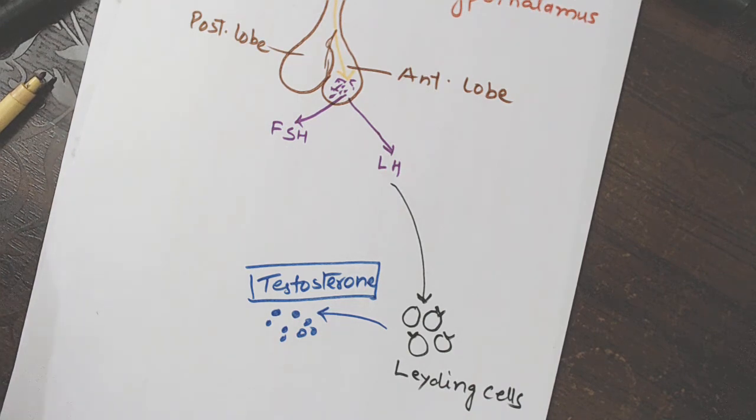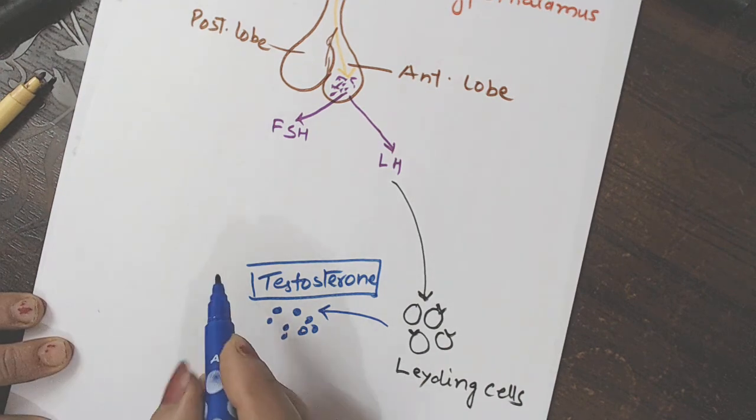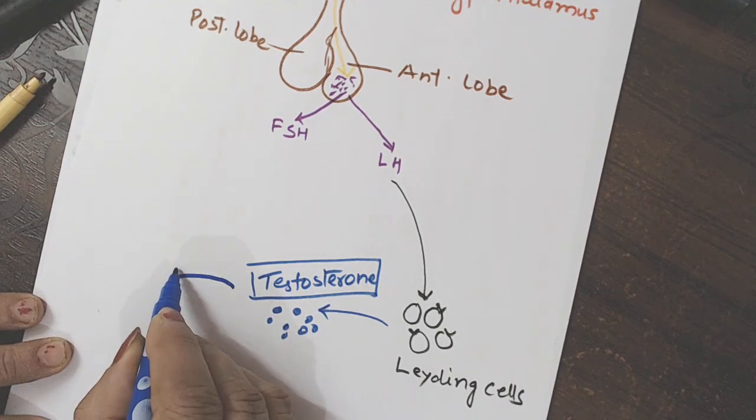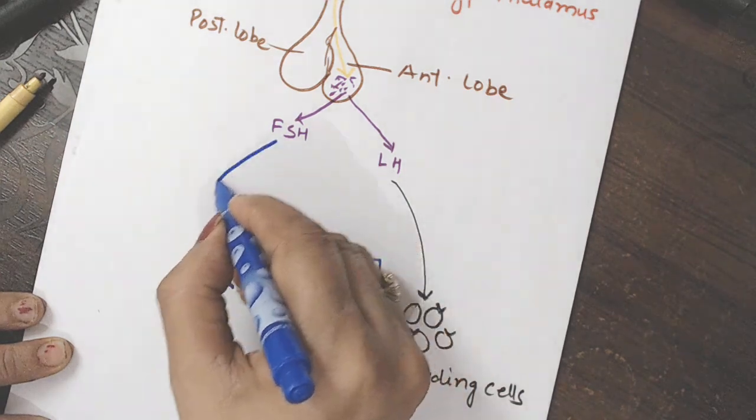This testosterone along with FSH. So, matlab ye na baat? Ki testosterone FSH ke saath mil karke kis ko stimulate karne wala hai bhai? Spermatogenic cells ko. Or Sertoli cells ko. Toh yahaan hum jara sa stimulate kara deta hai. Ye FSH bhi upar se bula lete hai.